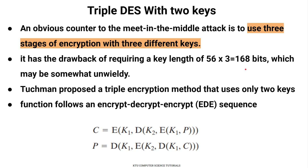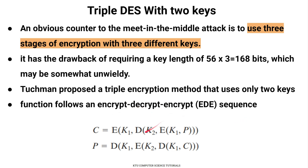Triple DES with 2 keys was proposed as a triple encryption method. It uses the Encrypt-Decrypt-Encrypt (EDE) sequence. The plaintext is first encrypted with K1, then decrypted with K2, then encrypted again with K1. This is the EDE sequence.